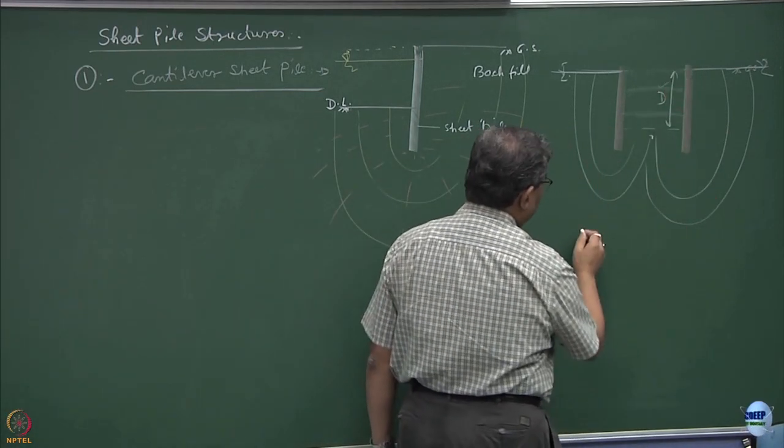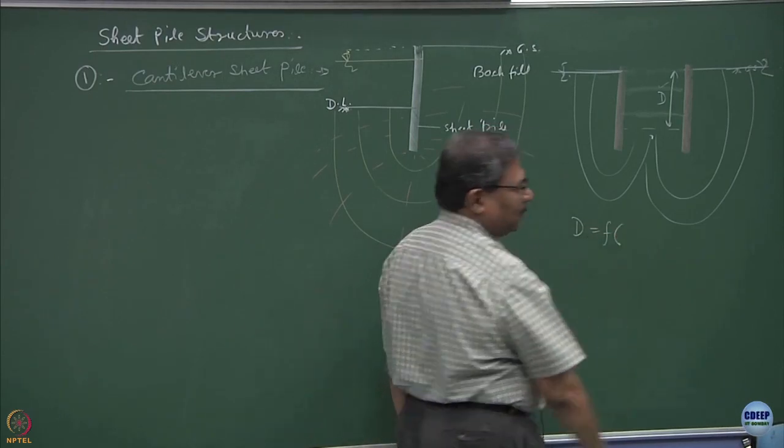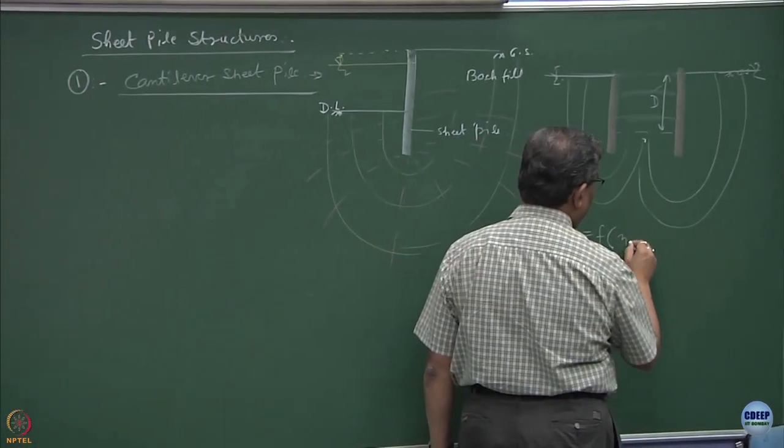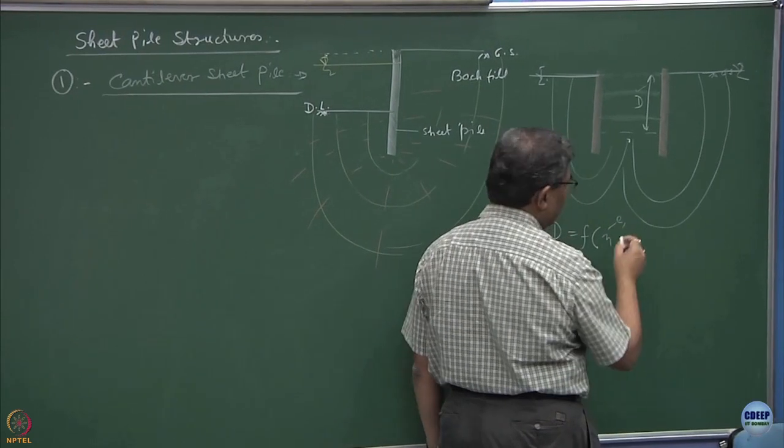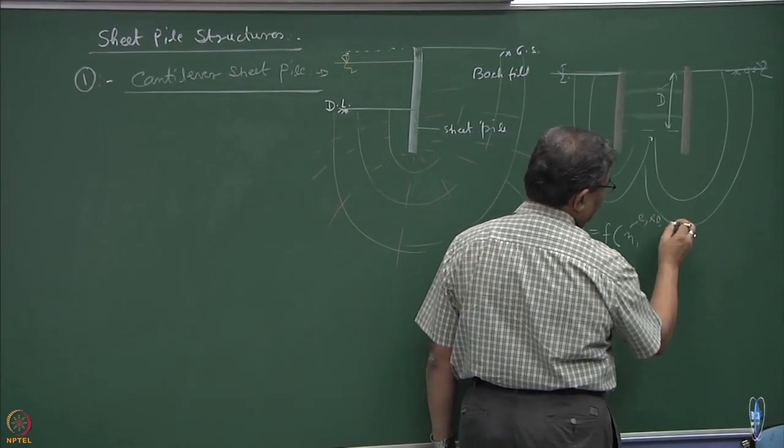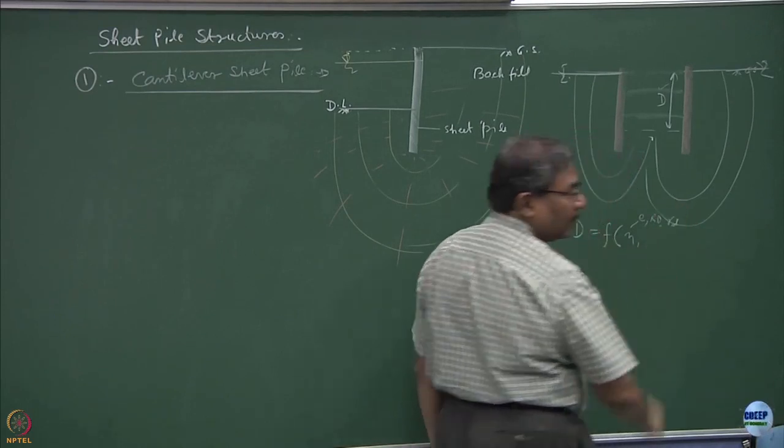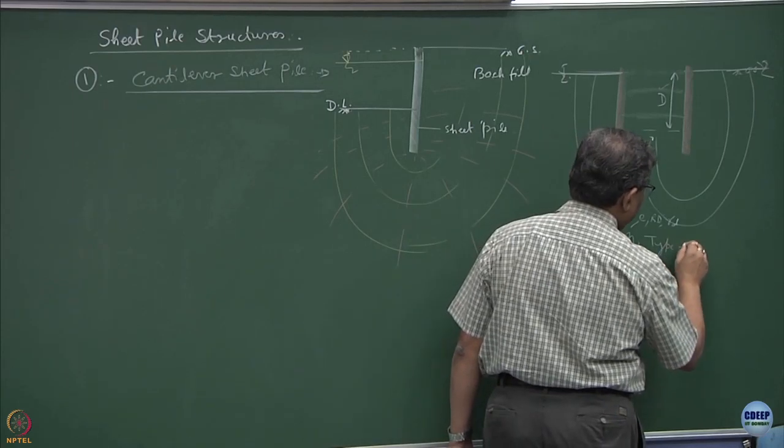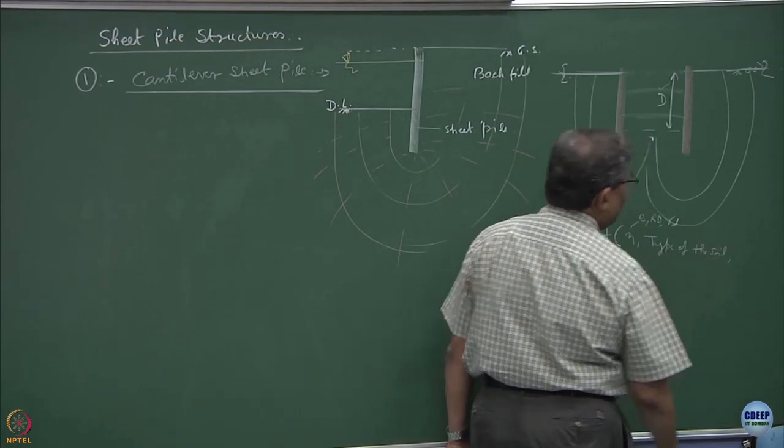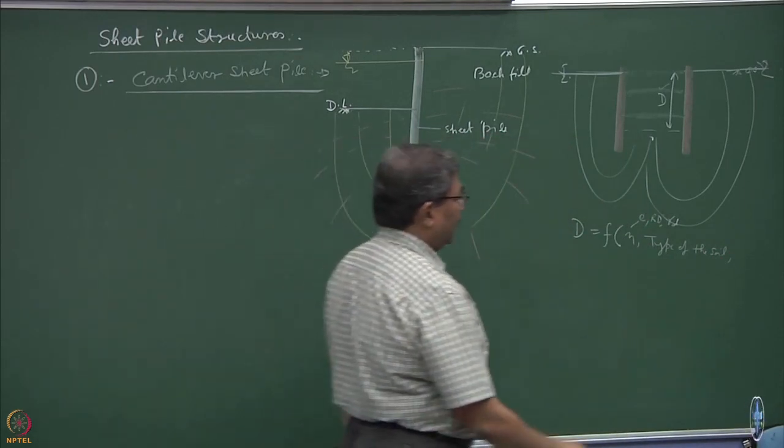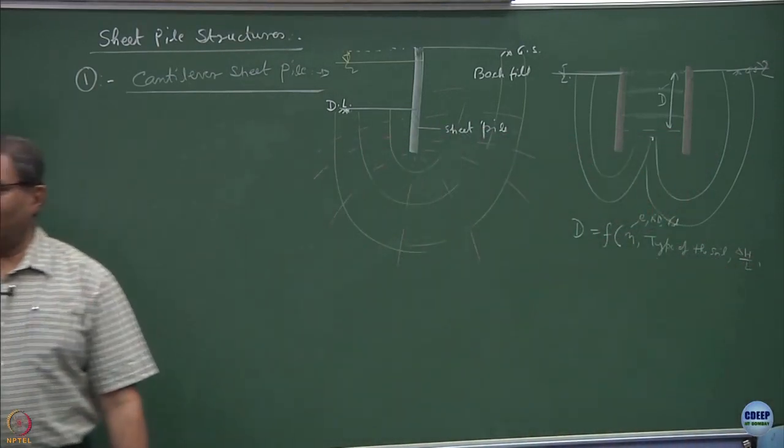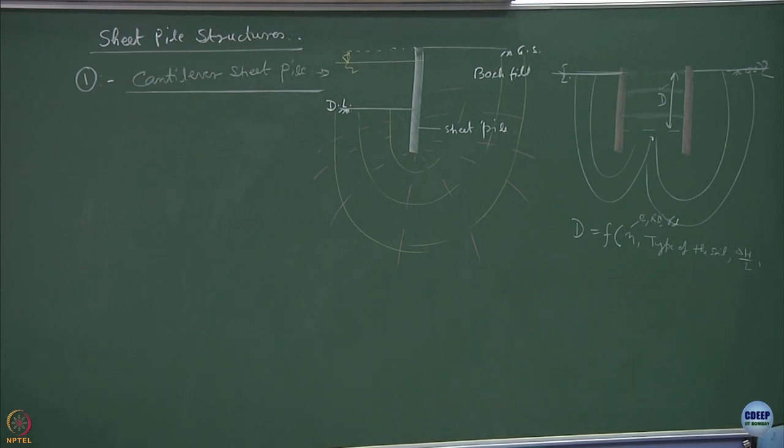That means this problem becomes a very interesting problem. D is going to be a function of how many parameters: the porosity which is inclusive of void ratio, Rd of the soil, gamma d of the soil, the type of the soil, hydraulic head, hydraulic gradient, delta h which is going to cause the instability in the trench, and length of the flow path.